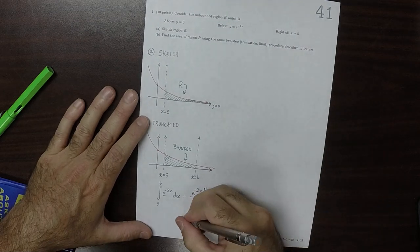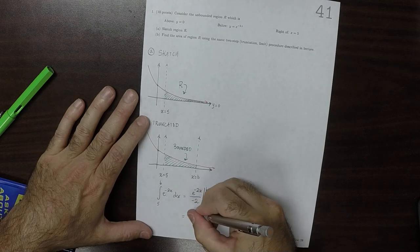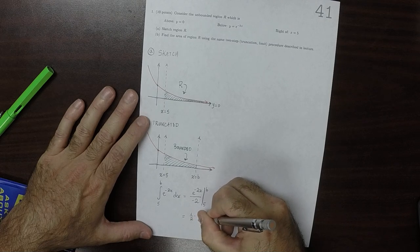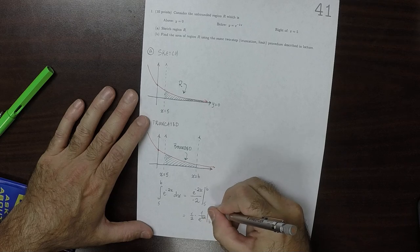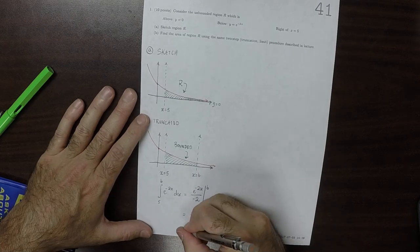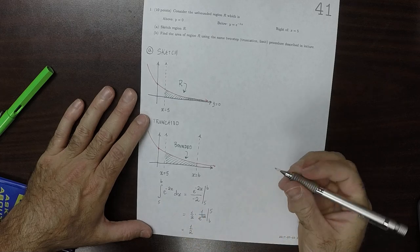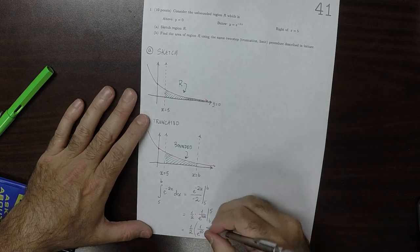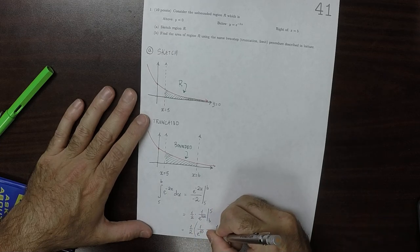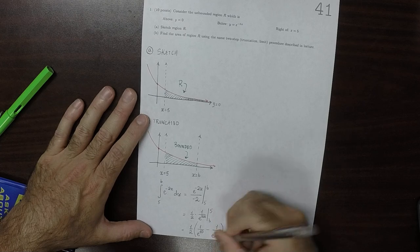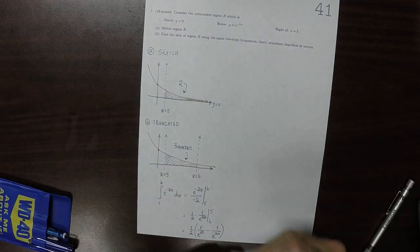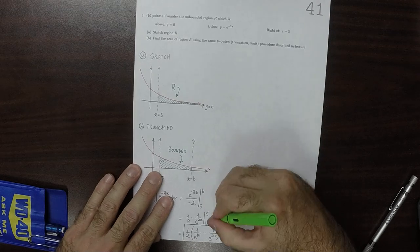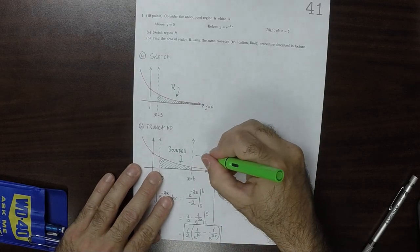I'll spin that negative to reverse the order of integration so that it looks like half, and then times 1 over exponential 2x from B to 5, so that it is half, 1 over exponential of 10 minus 1 over exponential of 2B. So that's how much area is in that region.